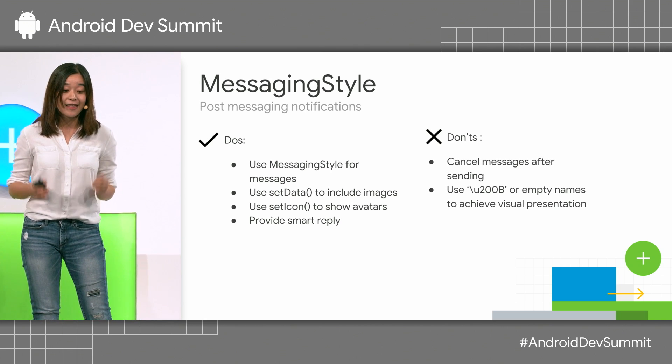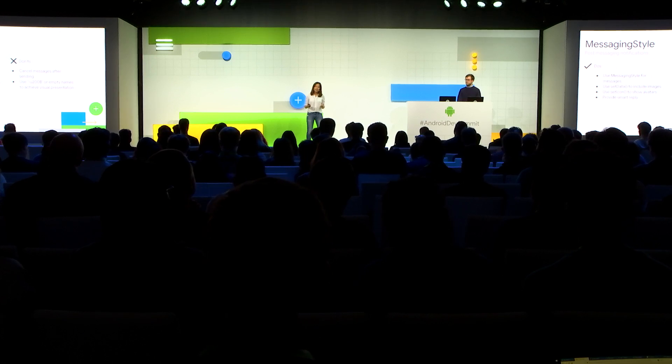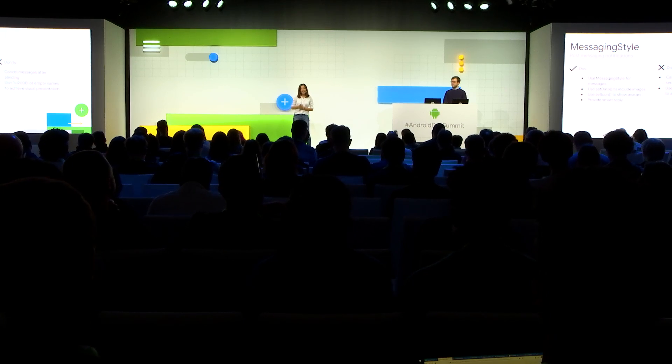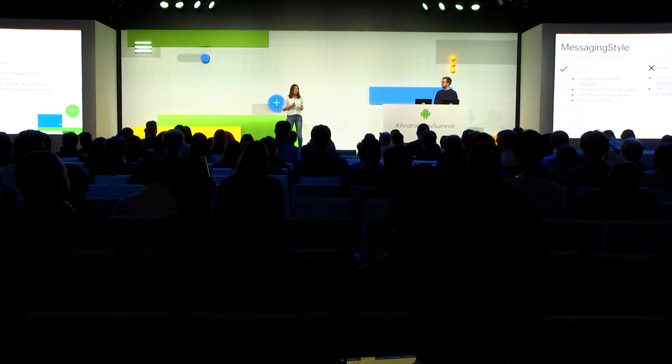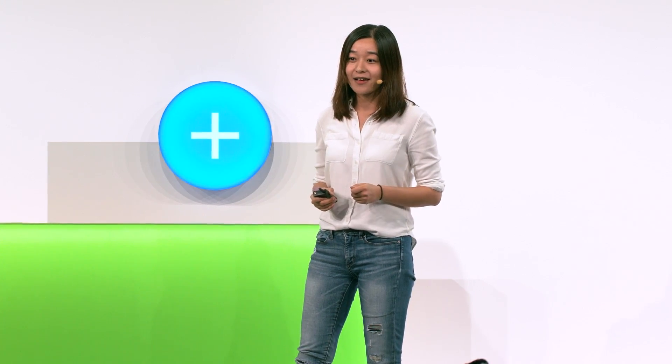A few things to avoid: there are good reasons to auto-cancel a notification to give the user a clean notification drawer, but after the user replies to a messaging notification, this is not one of those cases. Keep that notification there so the user can return to the conversation. Let the user swipe it away when they're finished. Also, don't set an empty name to achieve a visual presentation — on Android 9, this will break the presentation. And a person without a name is not a real person.